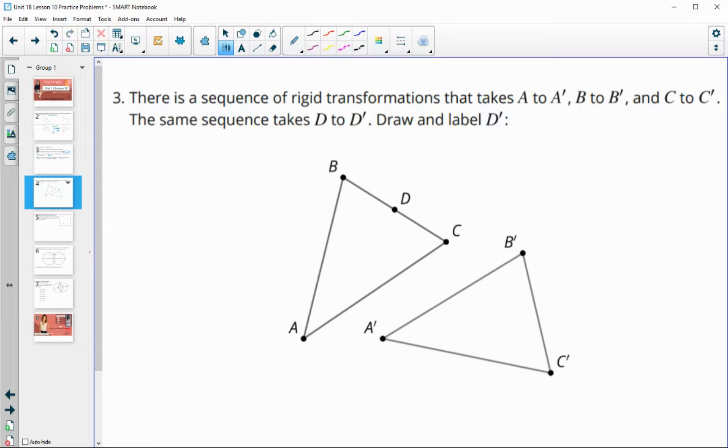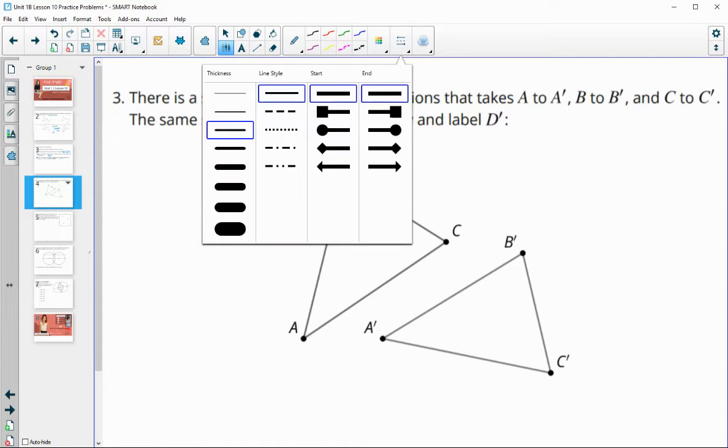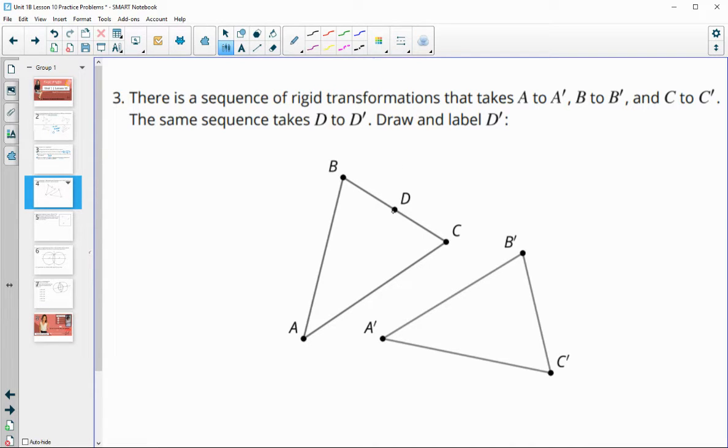Number three: there is a sequence of rigid transformations that takes A to A prime, B to B prime, and C to C prime. The same sequence is going to take D to D prime. So draw and label where D prime would be. First, let's look at where D is. D is right here, and it looks like it's about midway between B and C.